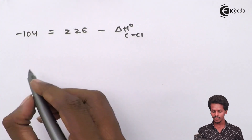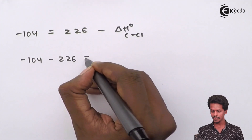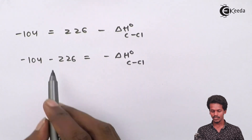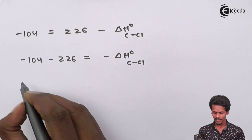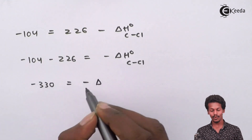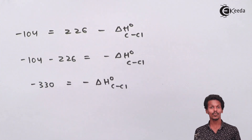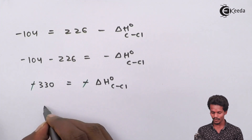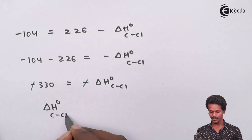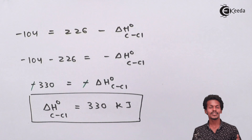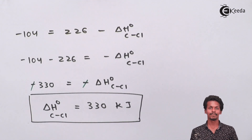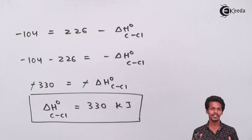Rearranging the final expression: −104 = 226 − ΔH°(C–Cl), which gives ΔH°(C–Cl) = 226 + 104 − ... After cancelling the negative signs, the bond enthalpy of the carbon-chlorine bond is found to be 330 kJ/mol. This is how we calculate the bond enthalpy of a covalent bond using the reaction enthalpy and the known bond enthalpies of reactants and products.